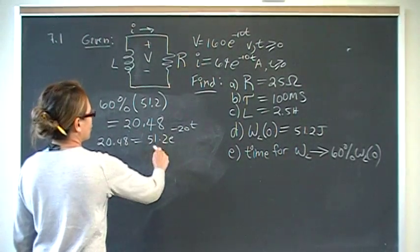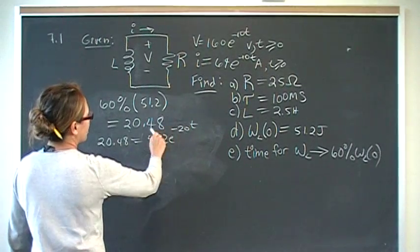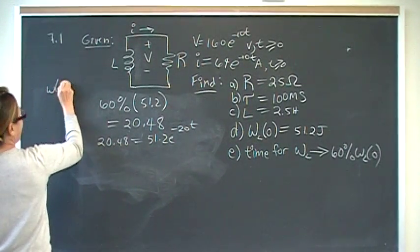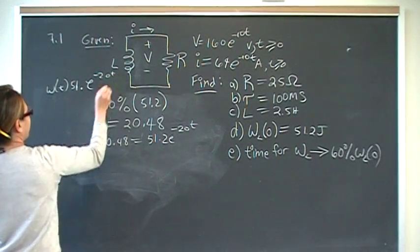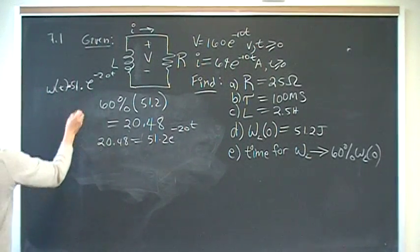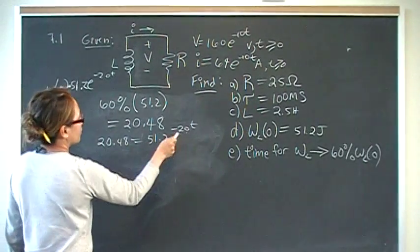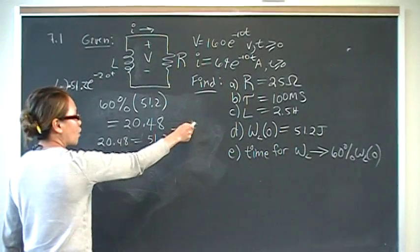So what I did was I took the function, the energy function, the general energy function, which we found to be W of t was 51.2 e to the negative 20t. So that's just the general function for energy. Take the general function for energy and set that equal to 40%, and find out what's that time.